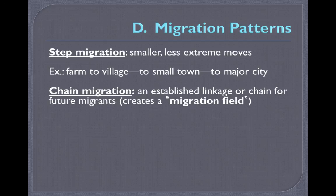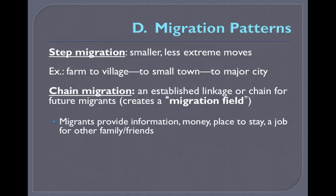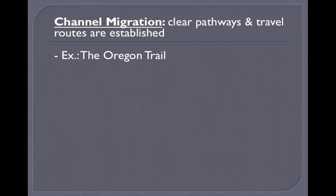Chain migration is where you establish a link or chain for future migrants — called a migration field. A guest worker or migrant provides information, money, a place to stay, or a job for other family and friends. Instead of everyone moving at once, one person goes first, establishes an enclave, sends money back, and then the family joins them later. It's a connection — a chain for future migrants.